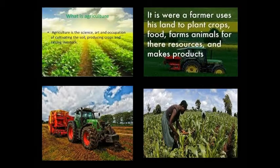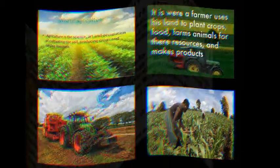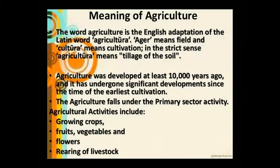What is agriculture? Agriculture is the science, art and occupation of cultivating the soil, producing crops and raising livestock. The word agriculture is derived from the Latin word 'agro' meaning field and 'culture' meaning cultivation. In the strict sense, agriculture means tillage of the soil.